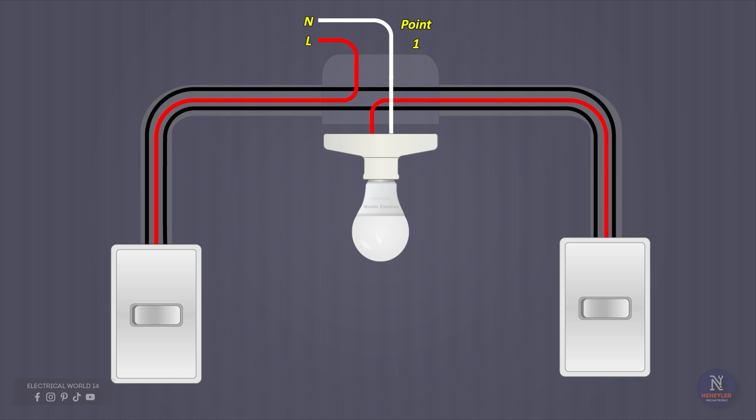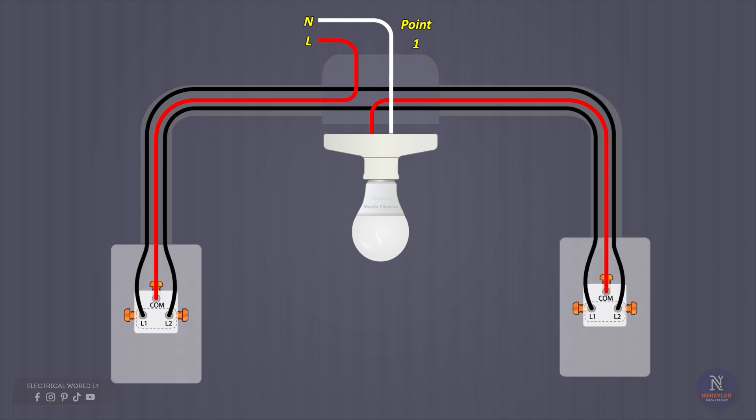If in this case it stays on and does not turn off, it is because something has been connected wrong in the switches, but don't worry. As long as you do not connect the phase and the neutral, there will be no short circuit. Just de-energize the cables and correct the error by changing the position of the cables between the switch terminals.